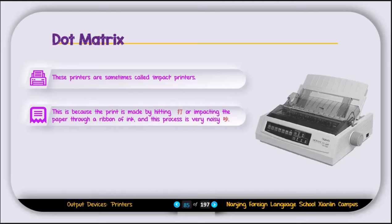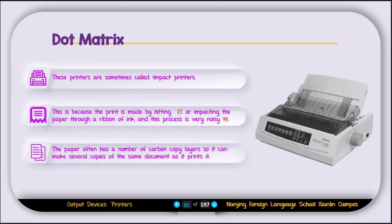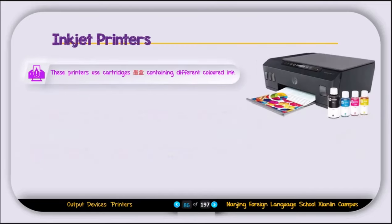The dot matrix printing process is very noisy because the ribbon is continuously hitting the paper. The paper often has multiple carbon copy layers, so it can make several copies of the same document at the same time. That is the main benefit of using this printer.